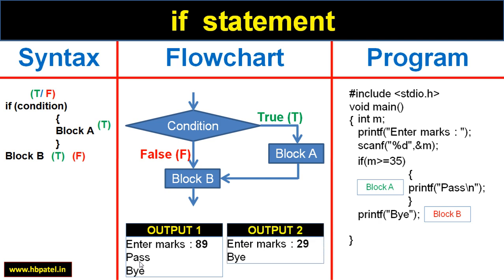Now if I run this program again, but if this time if I enter 29 here, then 29 greater than 35. Now this condition will result into false or no. In this case it will not enter into block A. It will directly jump to block B.